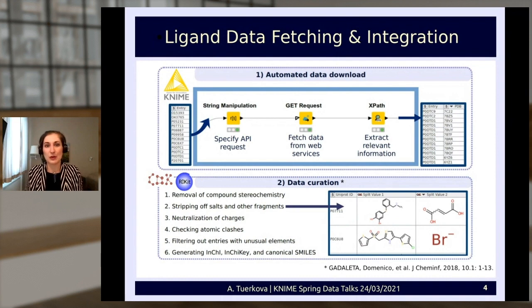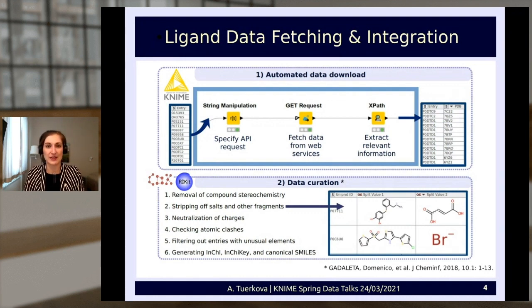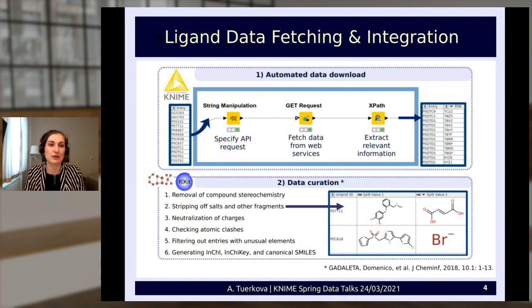It's important to note that ligand data from different databases can be quite heterogeneous and inconsistent in their chemical representation. We applied a data curation protocol to ensure all data had the same representation before merging. The workflow first removes compound stereochemistry, strips off salts and other fragments, neutralizes charges, checks atomic clashes, and filters out entries with unusual elements. Finally, standardized structures were used to generate InChI, InChIKey, and canonical SMILES for further processing.